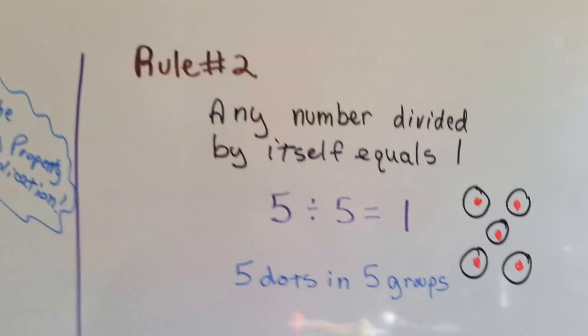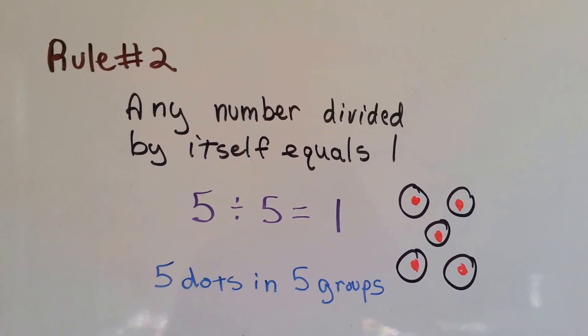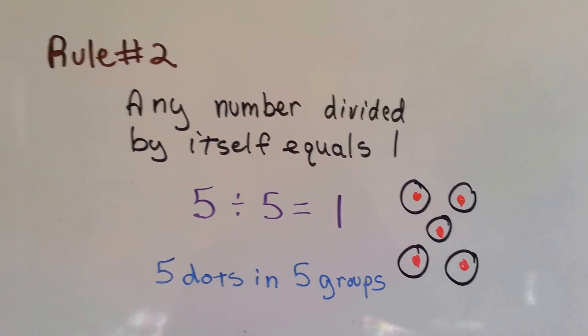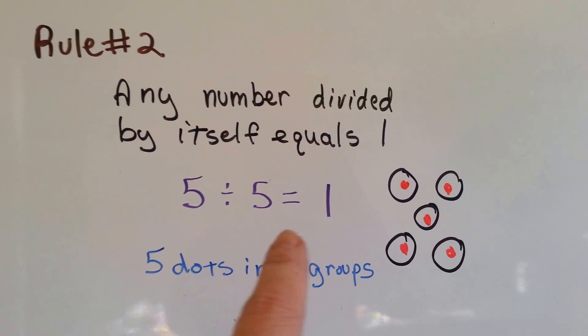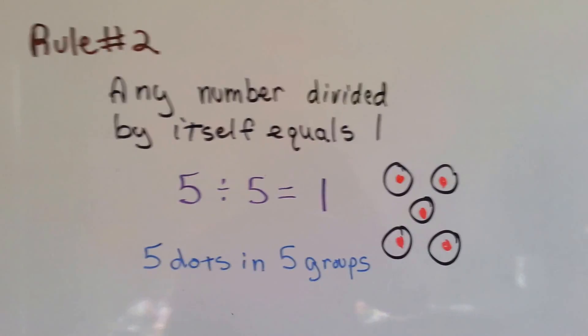Rule number 2. Any number divided by itself equals 1. We have 5 dots in 5 groups, and there's 1 dot in each group. 5 dots in 5 groups.